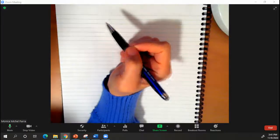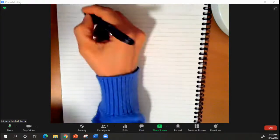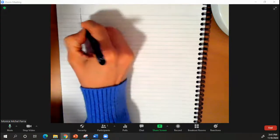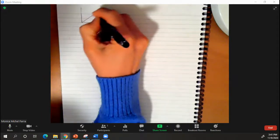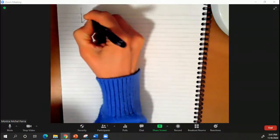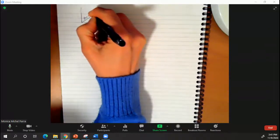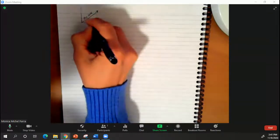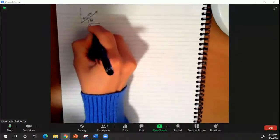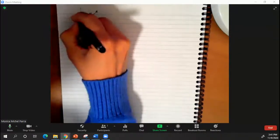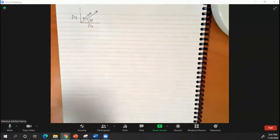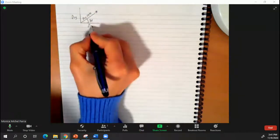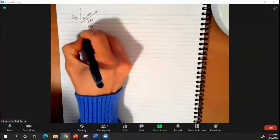Today we're going to learn how to calculate the components of a vector. If my vector A equals 10 newtons and is applied at an angle of 30 degrees, how do I find the component Ax and the component Ay? We should remember that Ax will be the adjacent side.